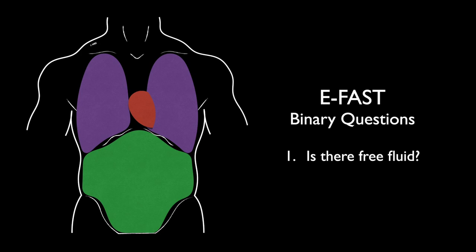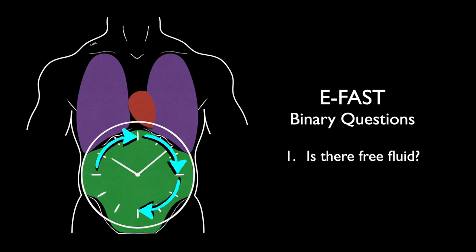When doing clinical ultrasound, we have binary questions. We're going to introduce three binary questions during this lecture, but the first one is: is there free fluid? We're going to look in all three areas to evaluate for free fluid. When going through this exam, I like to go in a clockwise manner around the abdomen, working from the most sensitive to the least sensitive areas for evaluating free fluid.